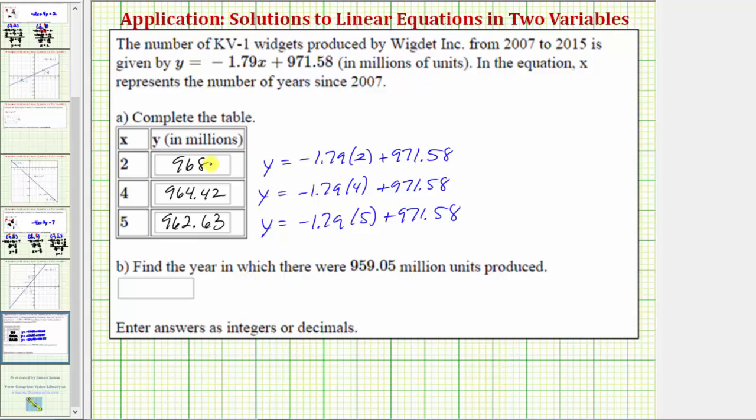Before we go to part b, let's talk about what this information tells us. Remember, x is the number of years since the year 2007. So for this first row, because x is two, this represents the year 2007 plus two, or the year 2009. And because the corresponding y value is 968, this tells us in the year 2009, the company produced 968 million widgets.